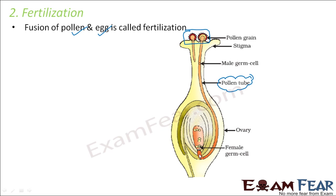The pollen tube finally reaches inside the ovary. The male gametes — also called male sex cells or male germ cells — are carried by this pollen tube through the style. The pollen tube carries the male gametes to reach the ovule inside the ovary. Inside the ovule, the female gametes are already present, and the male gametes are released there so that both can fuse together.